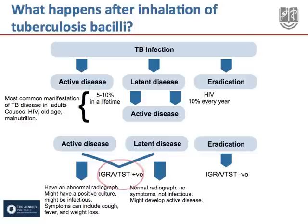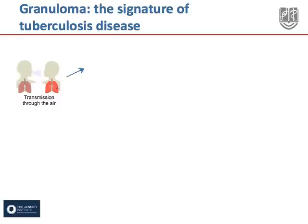Latently infected individuals have a normal chest radiograph, have no symptoms, and are not infectious. However, people with active TB will normally have an abnormal chest radiograph, will have symptoms such as weight loss, fever and cough, and might be infectious.